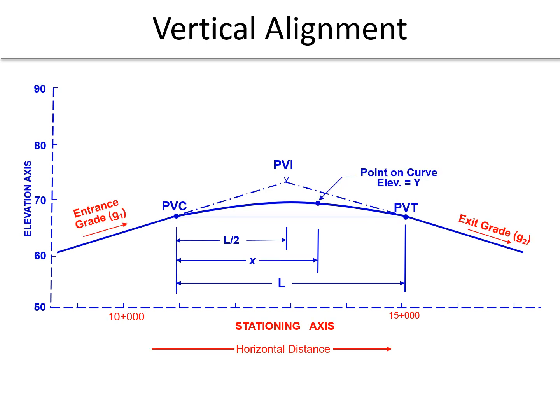We will use the entrance grade, G1, and exit grade, G2. These will be input into our parabolic equation in decimal form, as well as the stationing distances along the stationing axis, which are always measured horizontally. These will be input in meters into the parabolic equation.